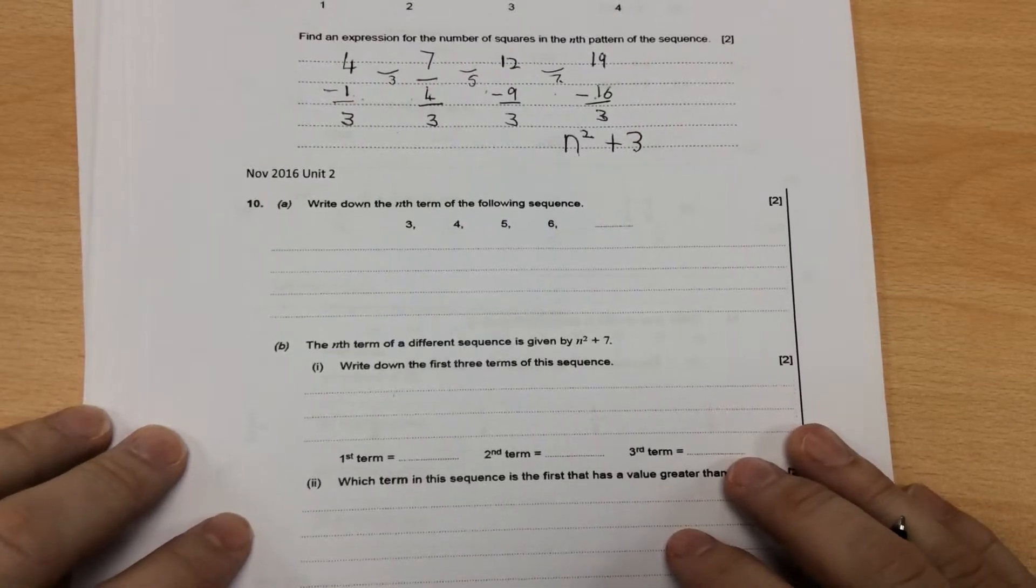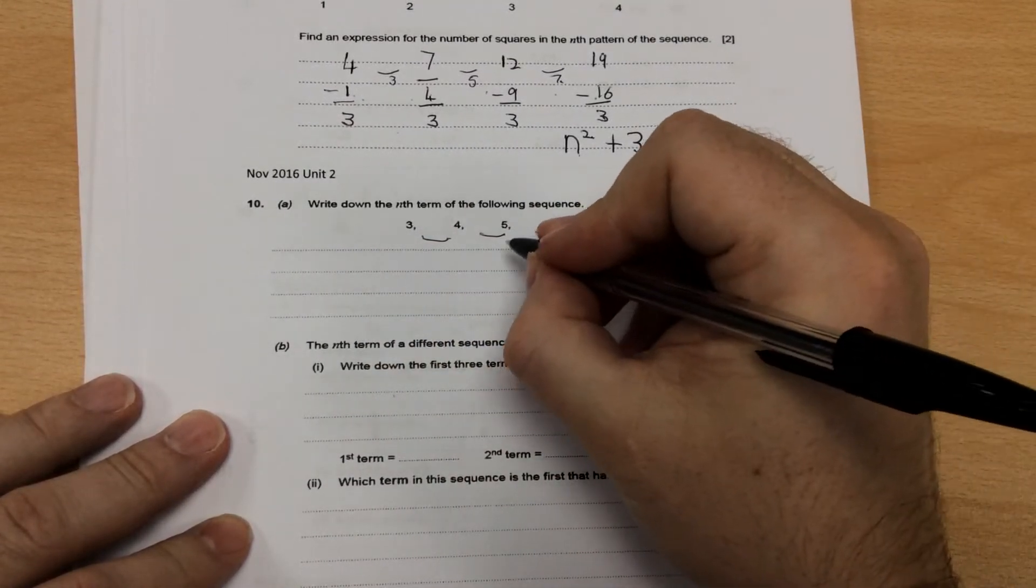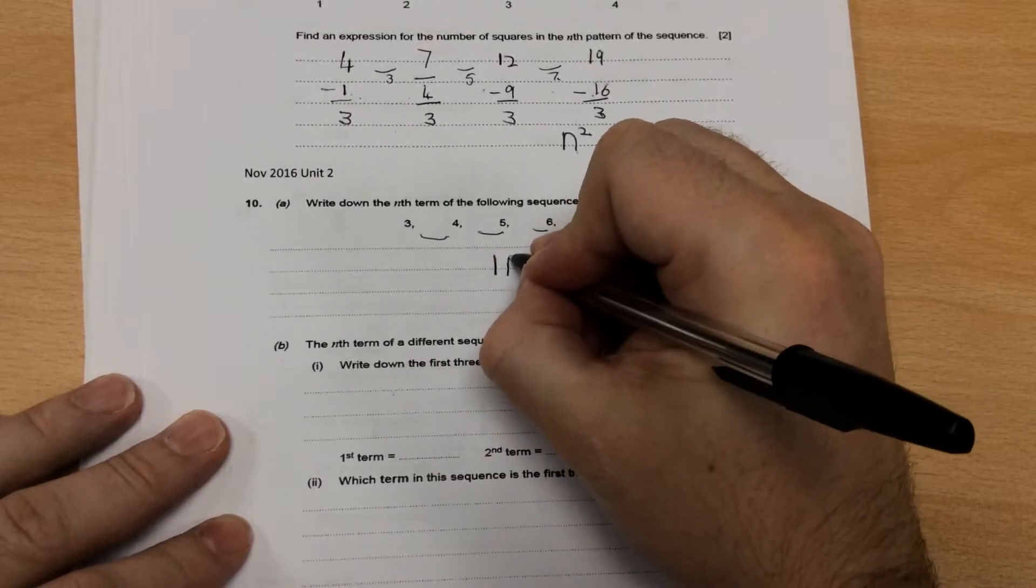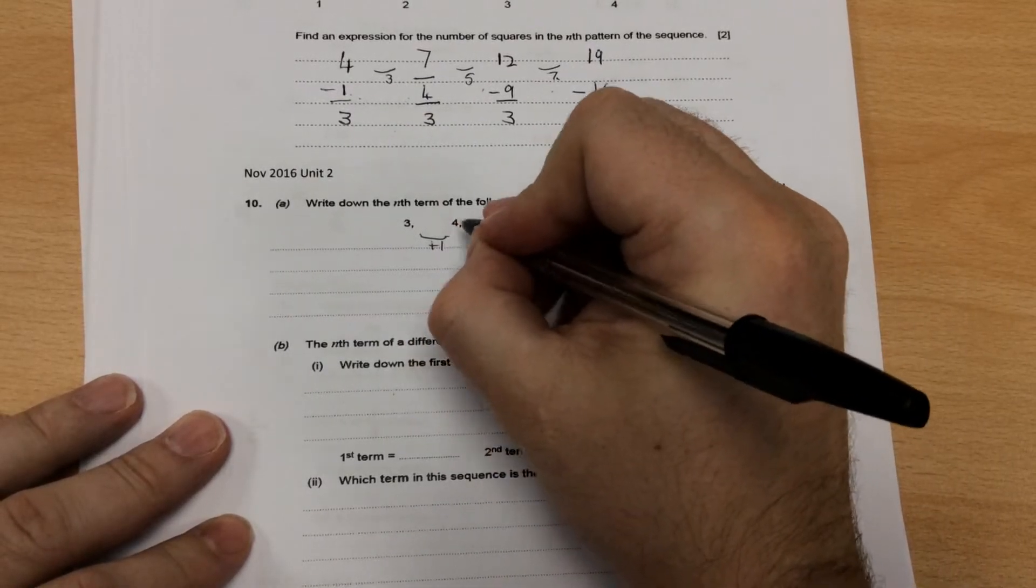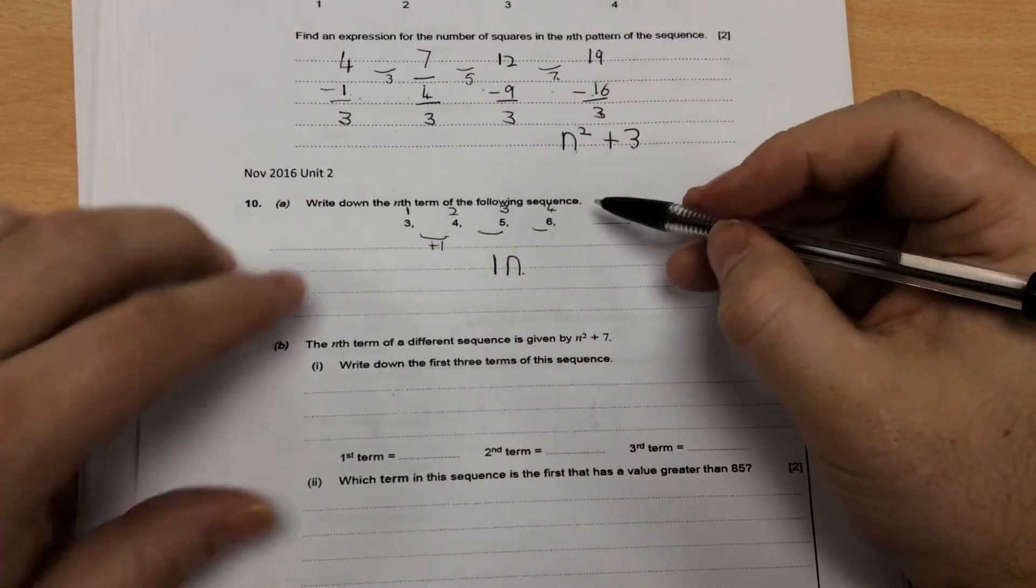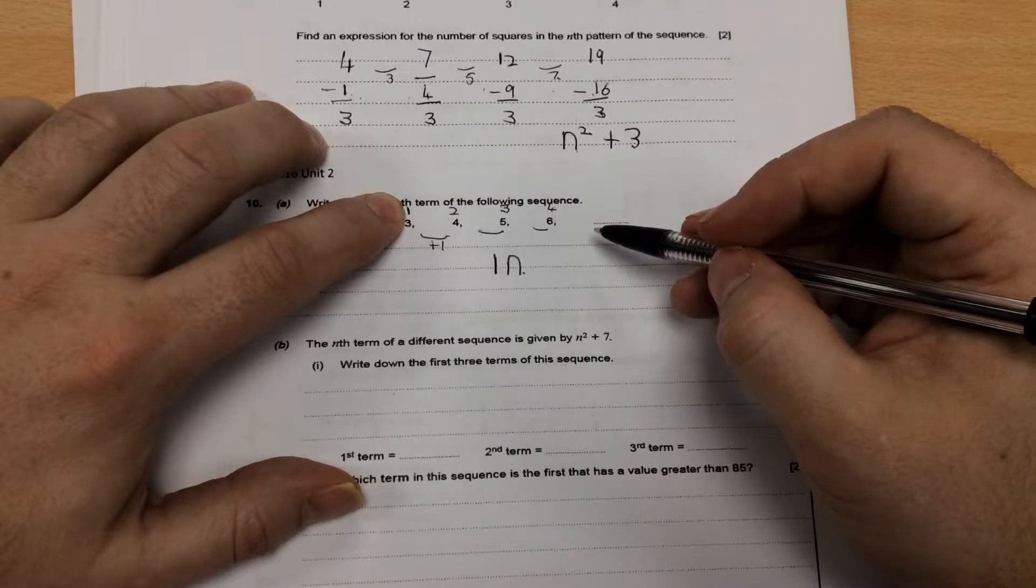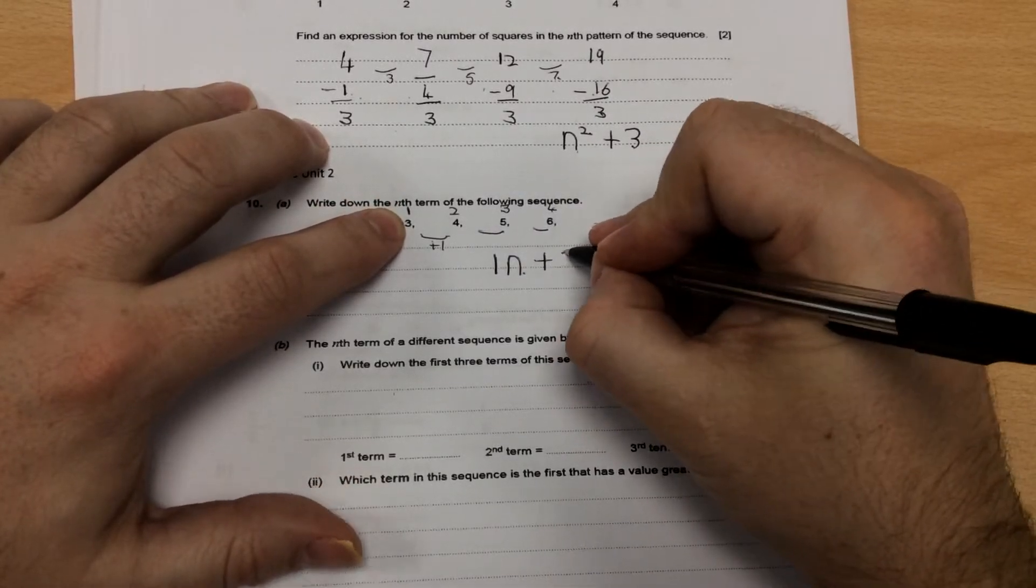The next one is a lot easier, because it's going up by the same amount each time. It's going up in ones, so it's going to be one n, because it's going up in ones. I'm going to write my one times table above it. And how do I get from the, well, it's going up into the first term. How do I get from one to three? It's add two.